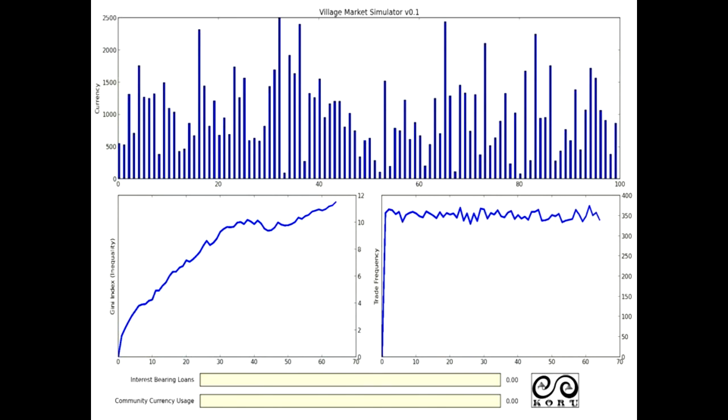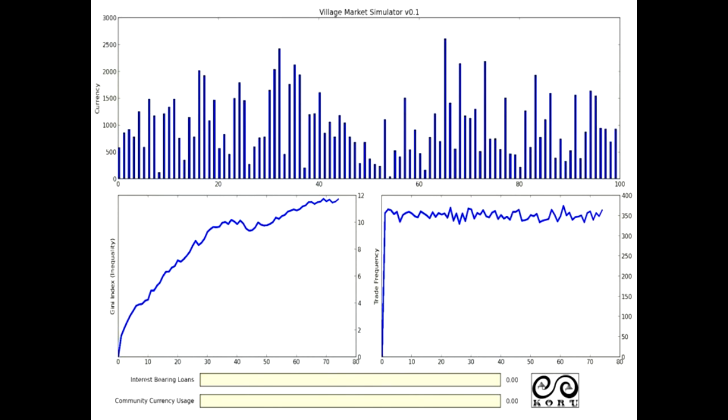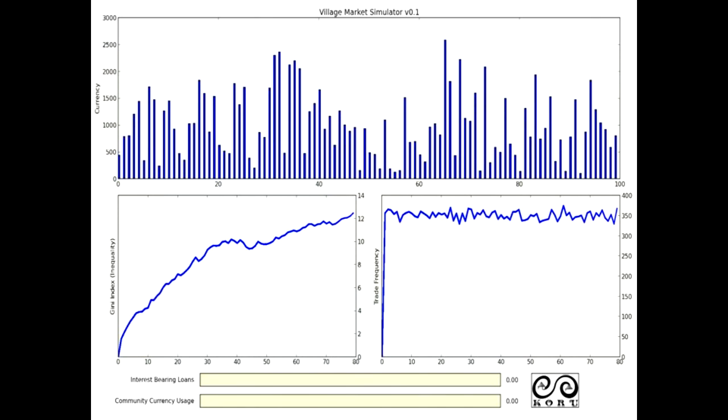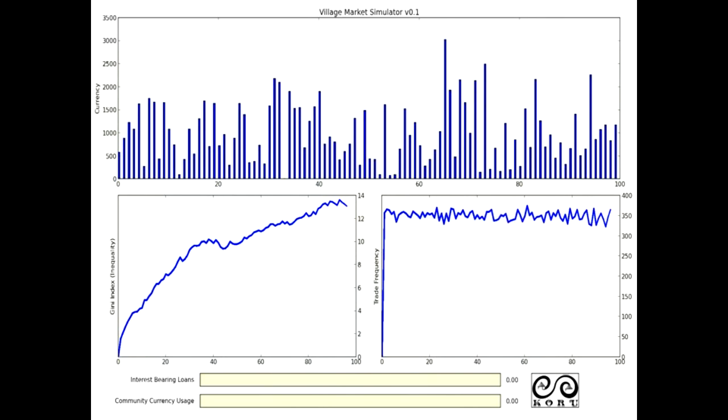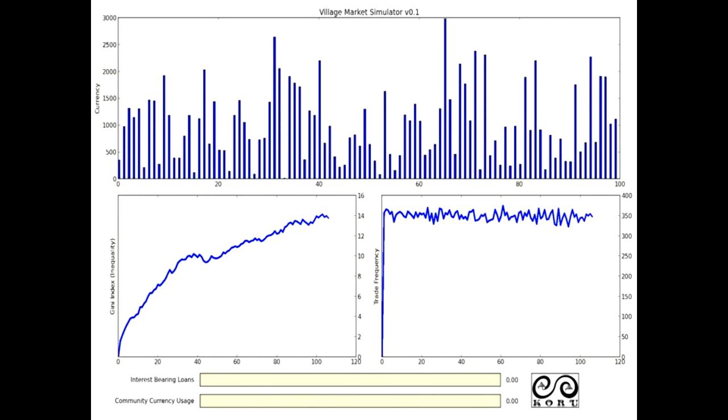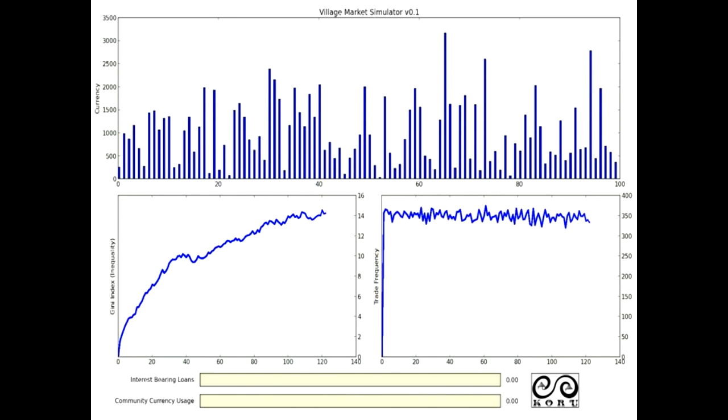So you get this distribution of money in the community. On the bottom left you can see this is actually a graph of the inequality in the system based on the Gini coefficient. The Gini coefficient the way it is right now is something like what you would see in Norway today. It's pretty equitable and on the bottom right you can see the amount of trade happening. Everyone's trading, things are going just normal.